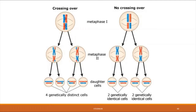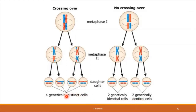In this figure, you can see the effect crossing over has on the diversity of gametes that come out of meiosis. On the left side, a cell undergoes crossing over during the first stage of meiosis; on the right, a cell does not. The cell that undergoes crossing over ends up with twice as many genetically distinct gametes — two times the diversity — when comparing an organism with four total chromosomes.